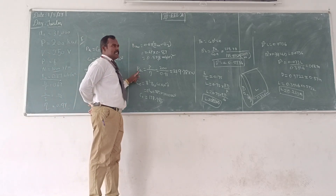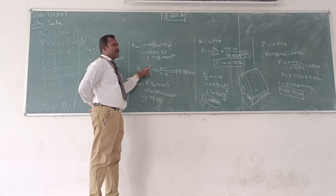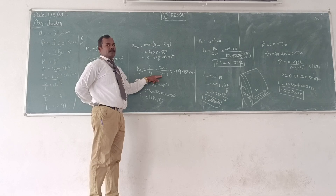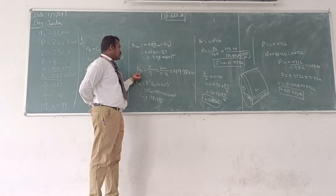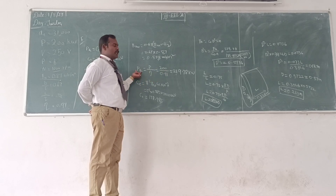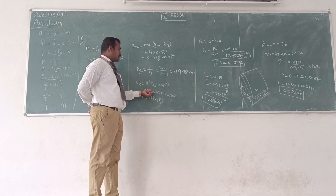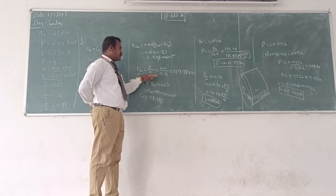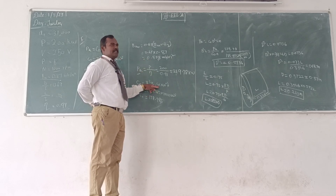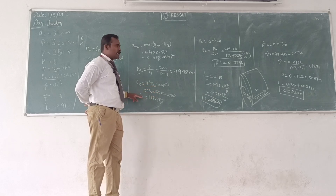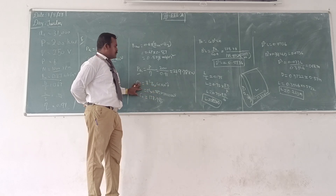Since it is a generator, the power developed in the armature PA should be equal to P divided by efficiency. The P value is given, and the efficiency is also given as 91%. From that we can calculate the PA value. Similarly, we have the formula for the output coefficient C0. The BAV value has been obtained and the AC — ampere conductors — is given as 31,000. So we can observe all values and find the output coefficient.